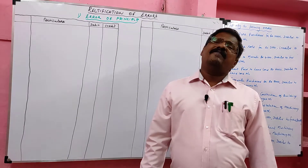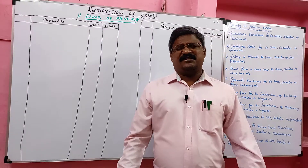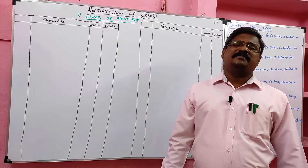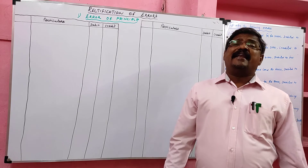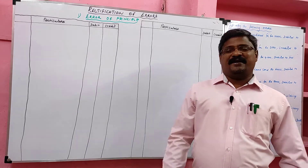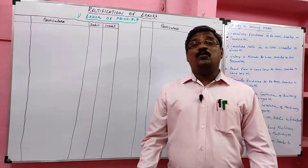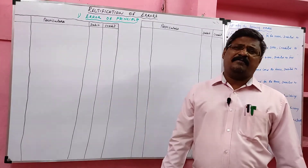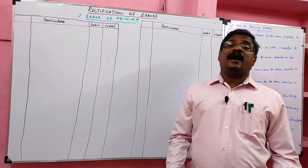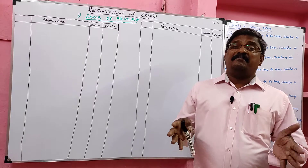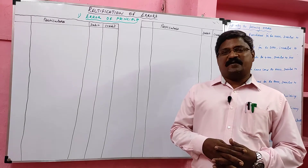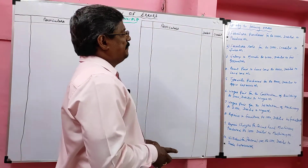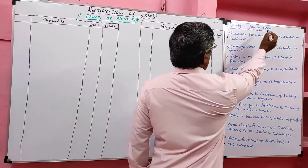Today we are going to discuss the first type of error, called error of principle. Error of principle is a fundamental error committed in accounting. When applying golden rules of accounts, if an accountant commits a mistake, that is called error of principle. Let me discuss some problems in relation to the error of principle.